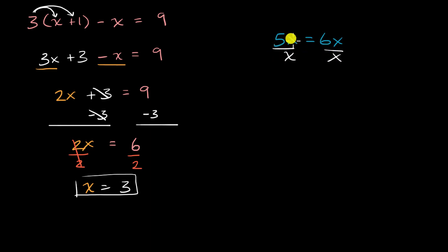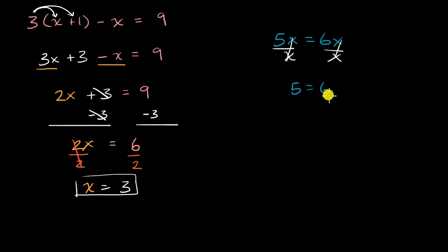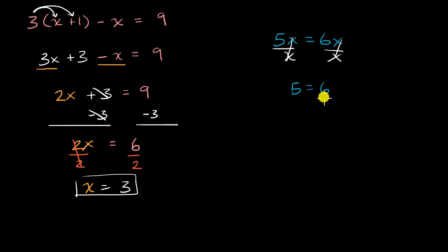If we did that, we would get five is equal to six, which it clearly is not. But what just happened here? Is it the fact that five x can never be equal to six x, and we did algebraically valid operations and got five equals six? Or did we do something wrong? Pause this video and think about it.